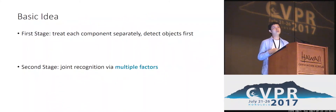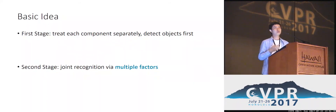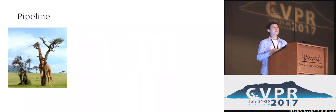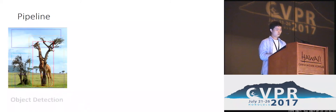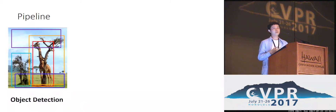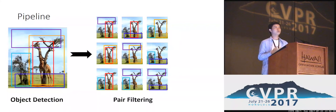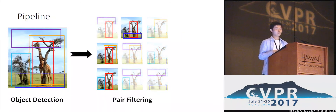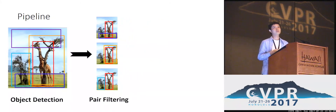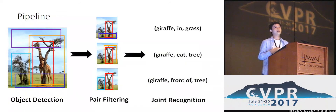To overcome these issues and take advantages of both approaches, our basic idea is that at first we treat each component separately. Specifically, we detect the objects first, and then form a set of object pairs. Upon the object pairs, we will use joint recognition based on multiple factors to get the triplet results. Given an input image, we first use state-of-the-art object detectors to get the objects, which are paired up to form a set of object candidates, where we apply a pair filter to filter out less important candidates. Upon the remaining candidates, we use joint recognition to get the triplet results.